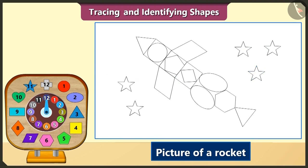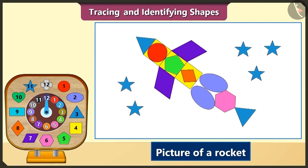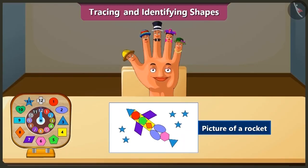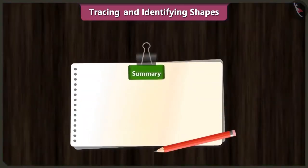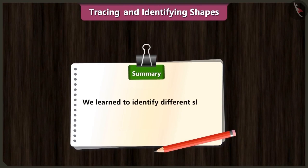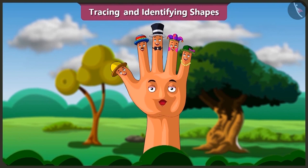Mr. Pointer, if we fill the colors in this drawing, then how would it look? If we fill the shapes we drew, it will look like this. Isn't it looking beautiful, Thumpkin? Oh wow! Friends, you can also draw some more pictures like this by tracing different shapes. Today we learned to identify different shapes and draw pictures by tracing them. You can also trace the shapes and draw different pictures.